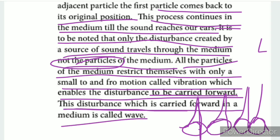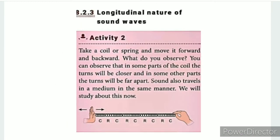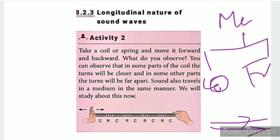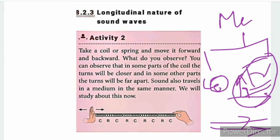The disturbance carried forward through a medium is called a wave — specifically a mechanical wave. There are two types of waves: longitudinal waves and transverse waves. In a longitudinal wave, the particle movement is in the same direction as the propagation. In a transverse wave, the particle movement is perpendicular to the direction of propagation.